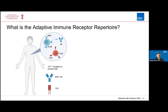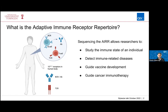To be able to recognize so many different antigens from different pathogens, these receptors also have to have a variety of different sequences. It's estimated that in the human body at any time point there are 10 billion to 100 billion different receptor sequences — BCRs and TCRs. AIR sequencing is about getting the individual sequences of these B cell and T cell receptors, with applications ranging from determining the immune state of an individual, studying immune-related diseases, guiding vaccine development, or guiding cancer immunotherapy.